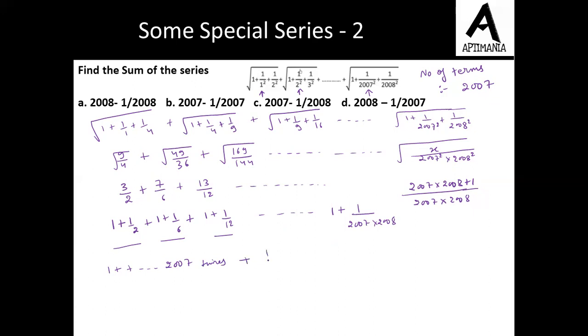And the remaining series now is 1/2 + 1/6 + 1/12 + ... + 1/(2007 × 2008). The 1 times 2007 equals 2007. Now for this part, 1/2 can be written as 1 - 1/2, this 1/6 can be written as 1/2 - 1/3.